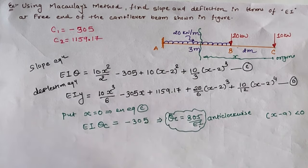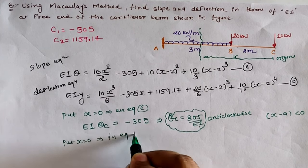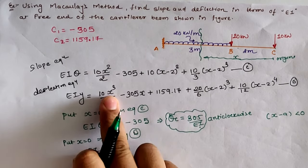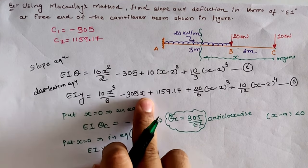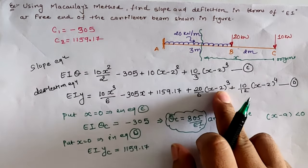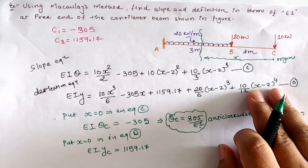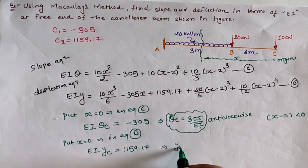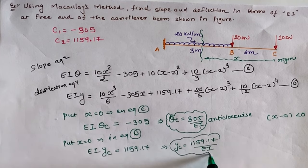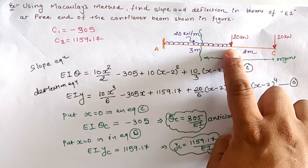Putting x = 0 in the deflection equation: the 10x³/6 term is zero, the minus 305 times 0 term is zero, C2 gives 1159.17, and the bracket terms (0 minus 2) are negative so they are ignored. Therefore the deflection at location C is yC = 1159.17/EI.